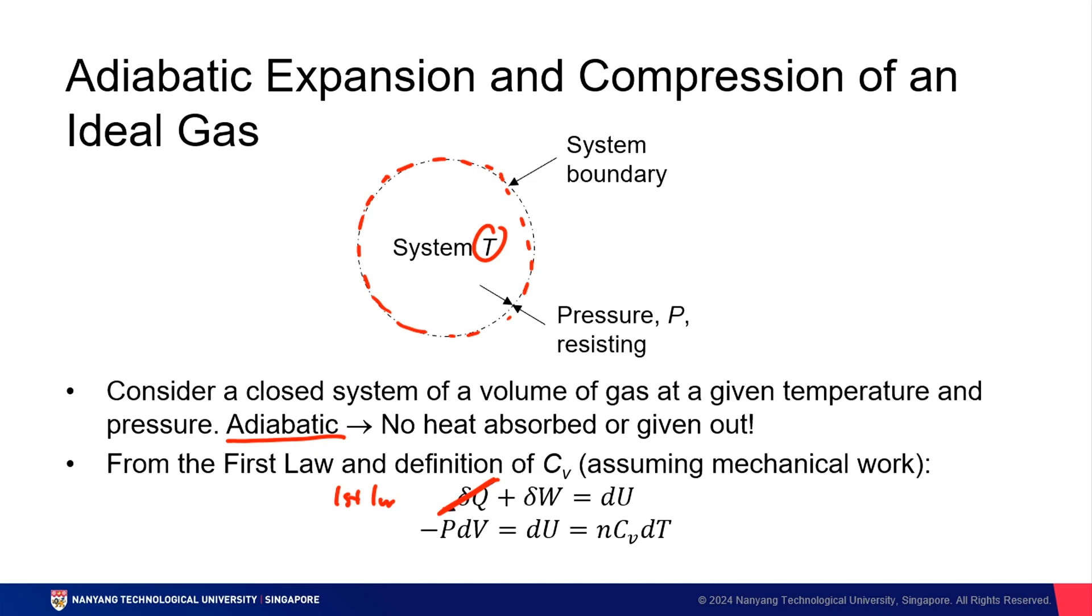Now we've got to turn this term into something where we can express pressure. So we can rewrite the δW as negative PdV. And we can also rewrite dU as nCvdT. Why? Because remember the equation for Cv is nCv equals dU over dT, keeping volume constant. And based on this, we can hence equate this to this in an expression like that.